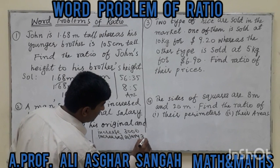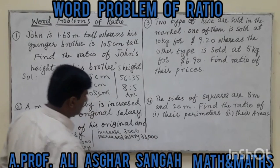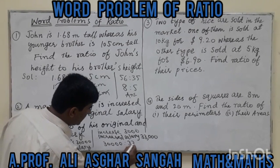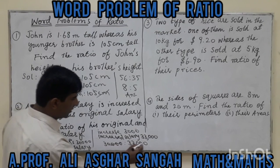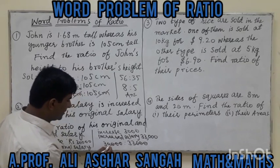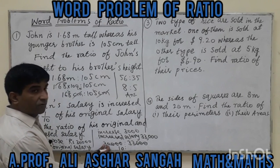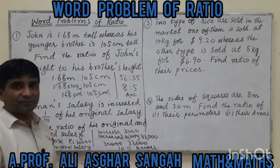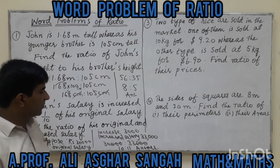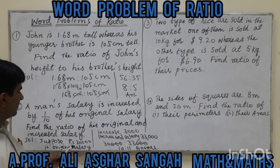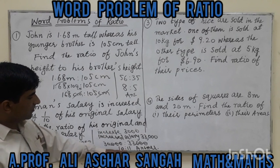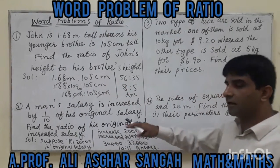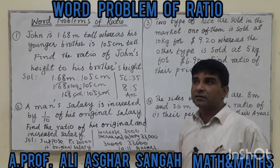The original salary is 30,000 and the increased salary is 33,000. The ratio of original to increased salary is 30,000 to 33,000, which simplifies to 10 to 11. This is the answer. In this solution we avoid using algebra or variables to keep it straightforward.